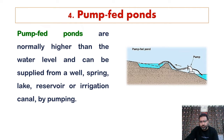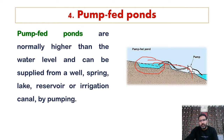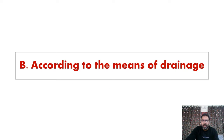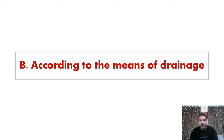The fourth category is pump-fed ponds. Pump-fed ponds are normally higher than the water table, meaning they are at a higher level than the water level. Water needs to be filled with the help of a dug well, bore well, or from a spring, lake, or reservoir, or by pumping.